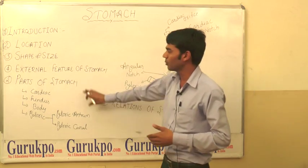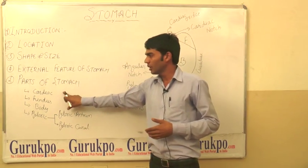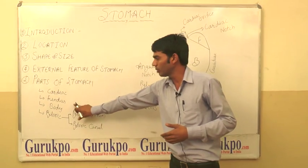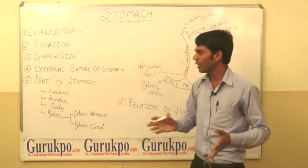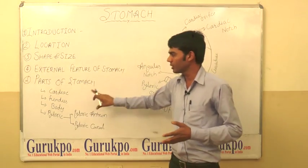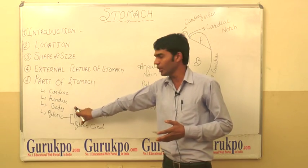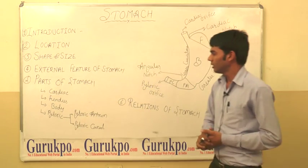Next we see about the parts of the stomach. The stomach has four parts: the cardiac part, the fundus part, the body part, and the pyloric part.